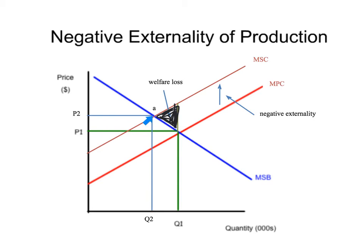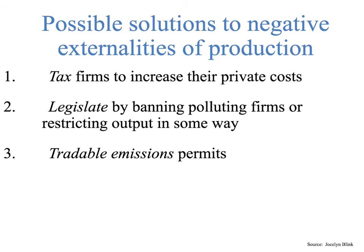So the government's going to get involved — like the parent of the household — and figure out a way of reducing that welfare loss triangle. There are a couple of solutions: one would be to tax firms to increase their private costs, getting that MPC up. They could also legislate by banning polluting firms or restricting output in some way, or they could use tradable emissions permits. Those are the three options.